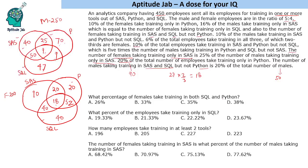The first question asks what percentage of females take training in both SQL and Python. A common mistake is to pick only the SQL-and-Python-but-not-SAS region (52), but since SAS is not excluded, we include both the exclusive region and the all-three region: 52 + 18 = 70. So 70 out of 200 females is 35 percent.